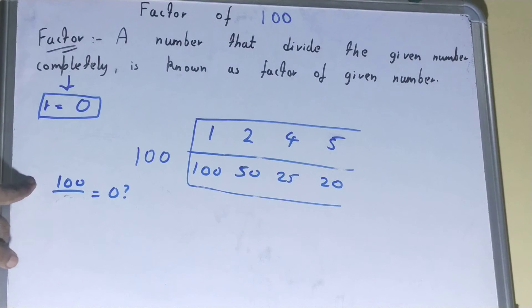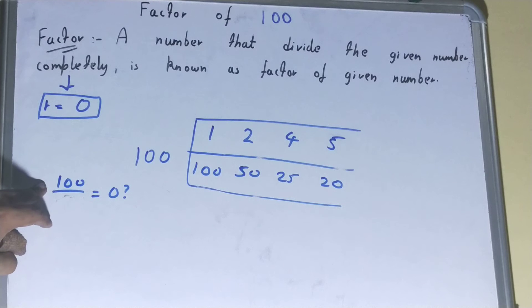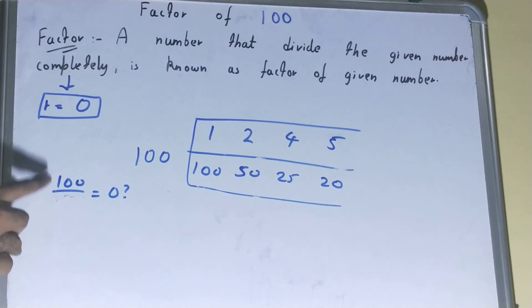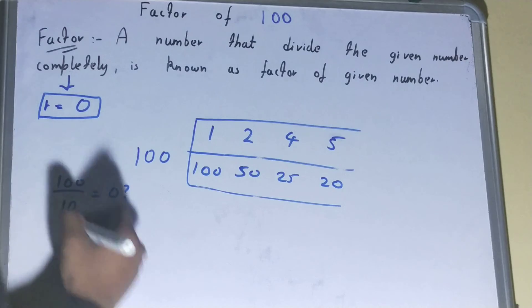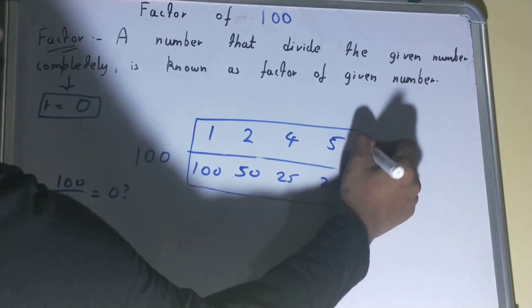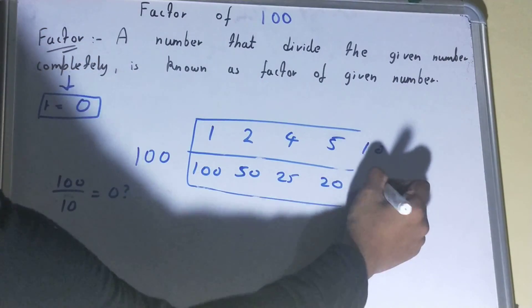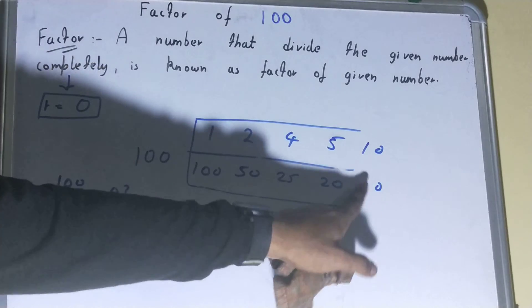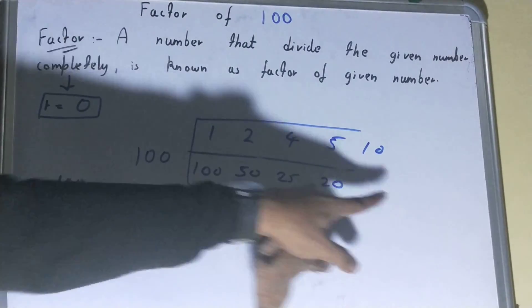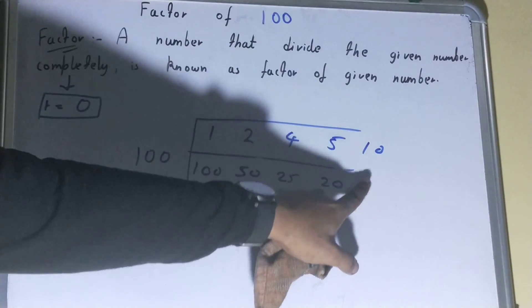6 cannot divide 100, 7 cannot divide, 8 cannot divide, and 9 cannot divide. But 10 can divide — 10 multiplied by 10 equals 100. Since both numbers in the pair are 10, we write it only once to avoid duplicates.